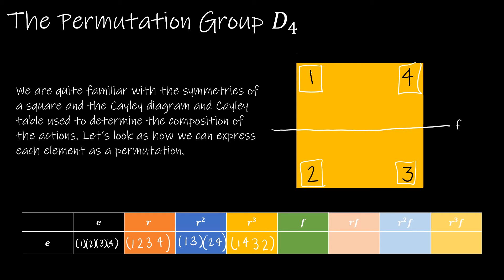Now let's look at the flips. These would change based on where you put your flip — horizontal, vertical, diagonal. I'm using a horizontal flip. So F takes one to two, two to one, three to four, and four to three, because they just flip across that horizontal line.